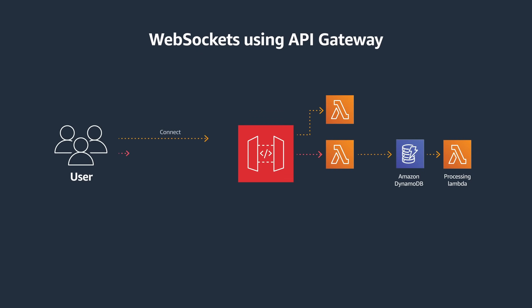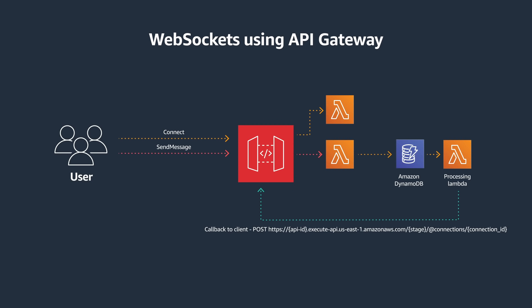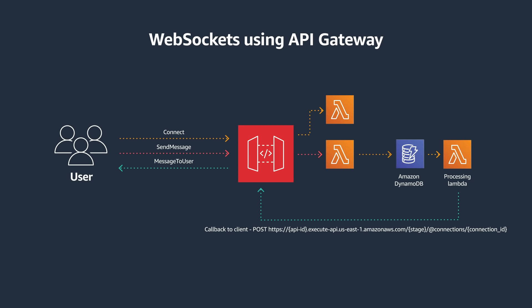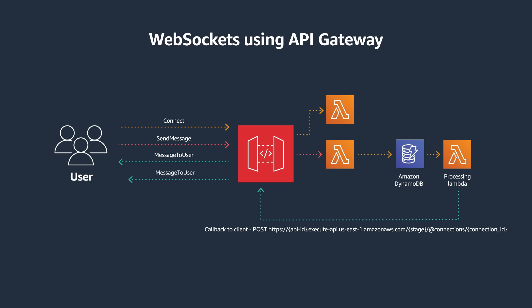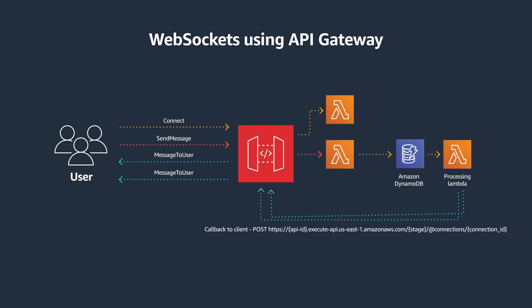Using the connection ID, which we persisted into DynamoDB earlier, the Lambda function can create a callback URL, which it uses to push a message to the client asynchronously. Additionally, the Lambda function can push multiple messages to the user if required using the same callback URL.